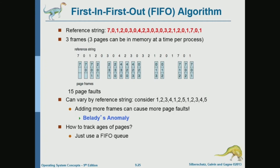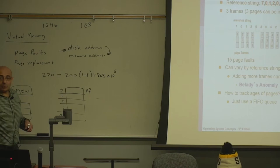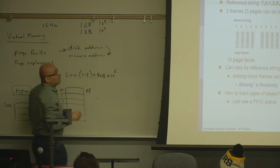Let's look first into the First-In, First-Out replacement policy. More frames means more memory — you just divide your available memory into frames. For example, if you have one gigabyte of memory and your page size is 1 kilobyte, that's 10^9 divided by 10^3, giving you a million frames.